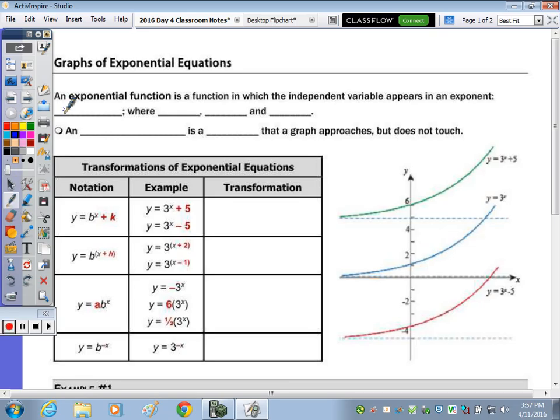So the equation looks like this: y equals a times b to the x, where a is not equal to 0, or else when you multiply b to the x times 0 that would be 0 and you'd get rid of that exponential function. Your b value is greater than 0 and it doesn't equal 1, because if it did, 1 to anything is 1, and then 1 times your a value would just be y equals a, which is a linear function.